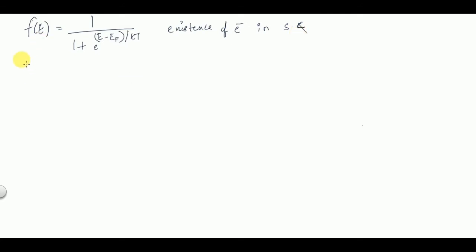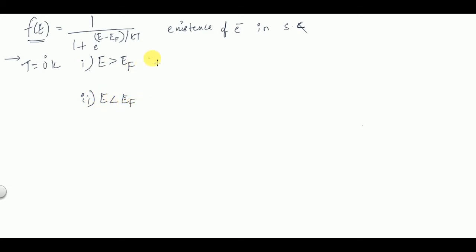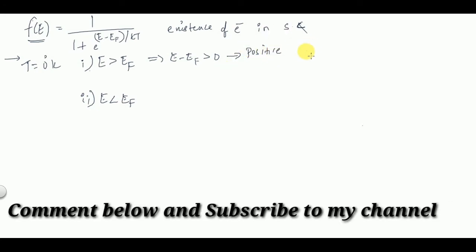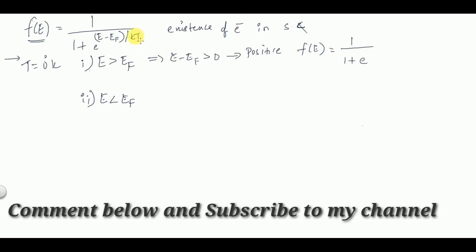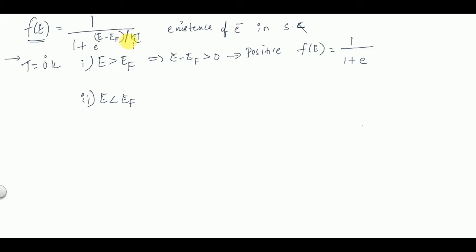We'll take some cases and see the effect on f(E) in a semiconductor. When T = 0 K, there are two cases. First case: when E > E_F, then (E − E_F) is positive. Since T = 0, this term becomes e^∞, so f(E) = 1 / (1 + e^∞) = 1/∞ = 0.